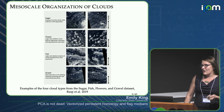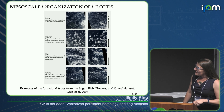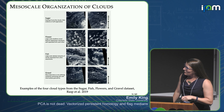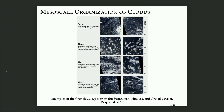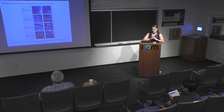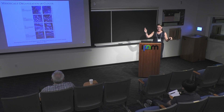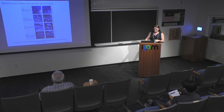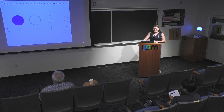Here is the problem we were working on: the mesoscale organization of clouds — sugar, flour, fish, and gravel types. Understanding when clouds have these different types of mesoscale organization can help with storm prediction. In atmospheric science, just like in microscopy, you have lots of images but not a whole lot of labeled data. So we decided to use topological data analysis.